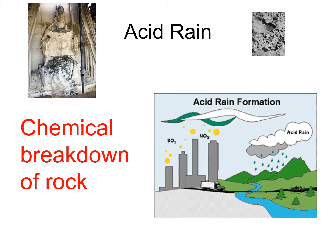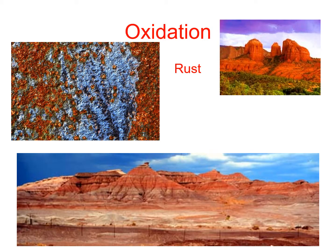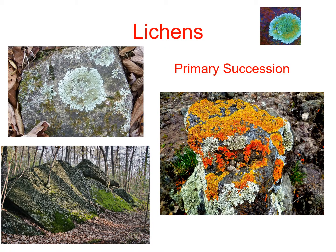Acid rain is not something we see around here, but it can be prevalent in other areas, and the acid in the rain can break down rock. This is really obvious in statues — we can tell that the shape has changed. That's a chemical breakdown of the rock. Oxidation is rust — any time we see a red rock or red soil, it's because there's iron in it and it's rusting. That's the chemical breakdown of the rock as well. And finally, lichens — like we talked about during primary succession — are a little bit acidic and have enzymes that can break down rock and start turning it into soil, because there is no soil in primary succession.